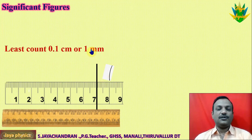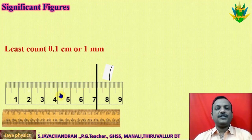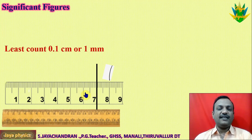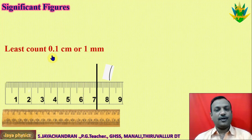The smallest measurement that can be made using this scale — the scale's smallest measurable value is one millimeter, and that one millimeter on the scale is the least count.